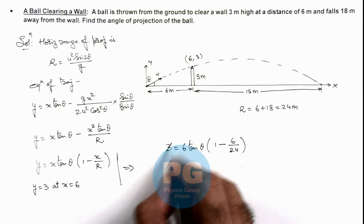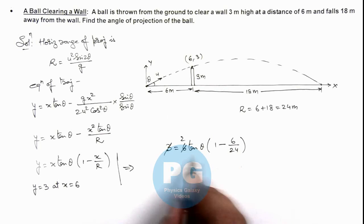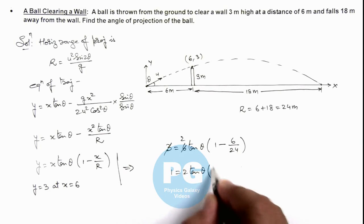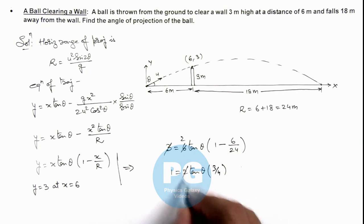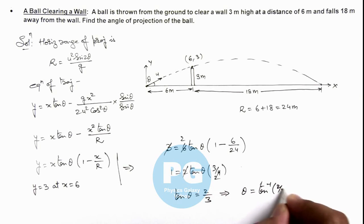So this 3 can be taken as 2 on the other side, and if we further simplify this it will give us 1 equals 2 tan theta multiplied by 3 by 4. Here 2 also gets cancelled out and the value of tan theta we are getting is 2 by 3. This implies the projection angle of projectile we can write as tan inverse of 2 by 3, that is the final result of this problem.